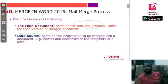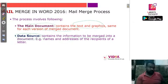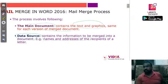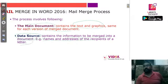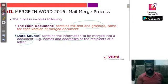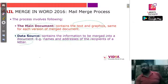The second component is the data source, which contains the information to be merged into the document. For example, suppose you have a list of users, friends, or relatives — their names and addresses would serve as the recipient information. This data source consists of the information about the users you are going to write the letter for.